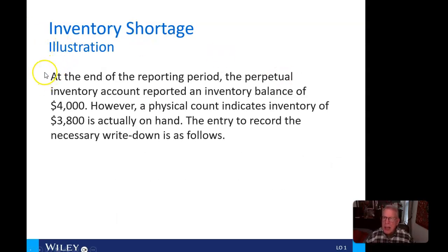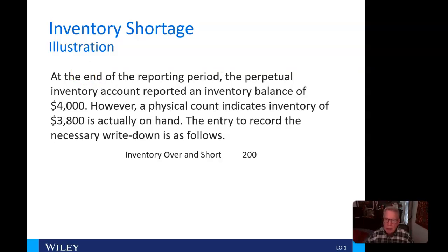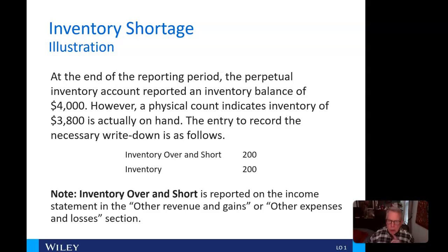Let's look at inventory shortages. At the end of the reporting period, the perpetual inventory account reported a balance of $4,000, but a physical count found only $3,800 on hand. The entry to record this write-down is a debit to inventory over and short and a credit to inventory. The inventory over and short account is reported on the income statement under other revenues and gains or other expenses and losses. Some companies use cost of goods sold in place of inventory over and short, but this is a more elegant approach.